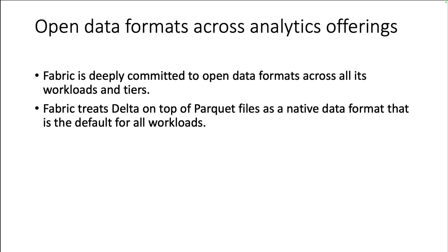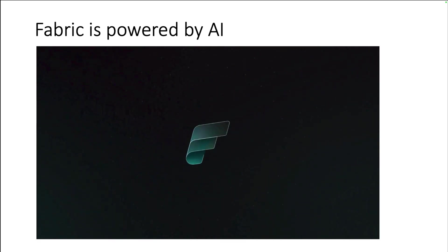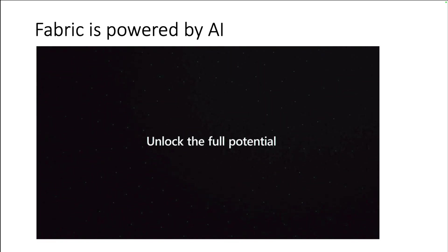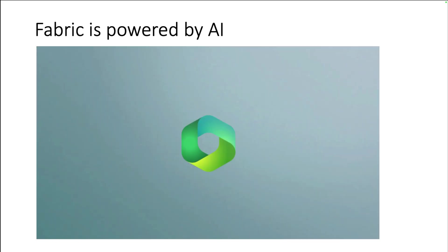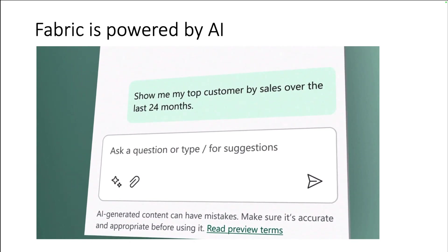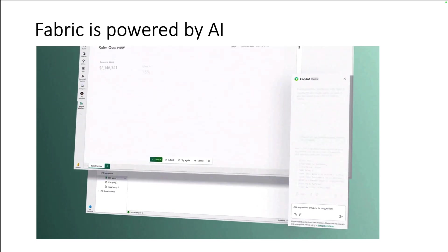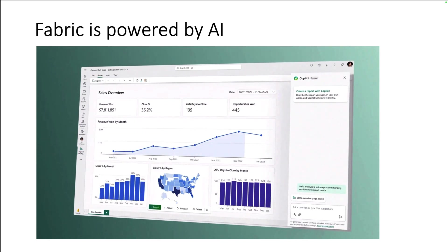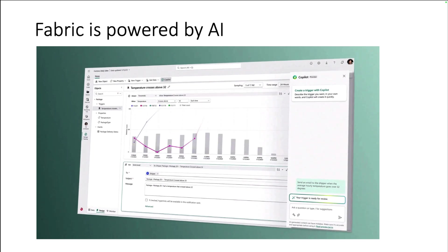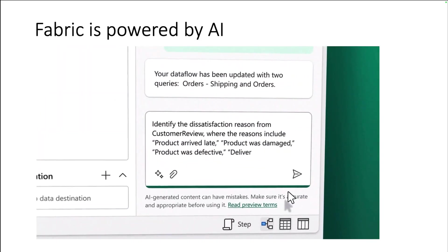Another interesting offering from Microsoft Fabric is its Open Data Format support. Fabric is deeply committed to Open Data Format across all the workloads and tiers. Also, Microsoft Fabric is powered by AI. Next-generation AI in Microsoft Fabric empowers you to unlock the full potential of your data. With Copilot integrated into every data experience, Microsoft Fabric lets you ask questions in natural language. From integrating data to writing code to finding insights and creating reports, new transformative AI experiences work alongside you every step of the way so you can stay focused on getting value from your data.